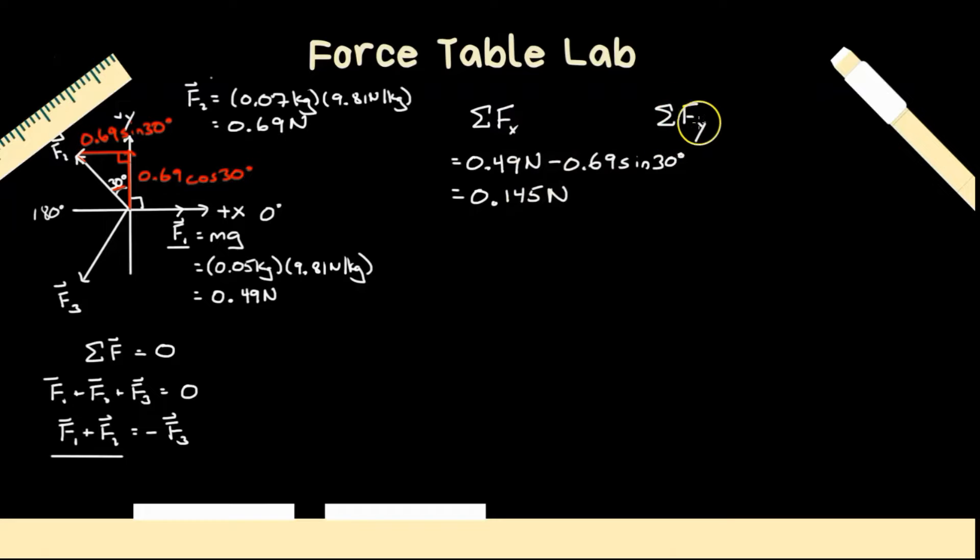What about in y? So let's do y. We'll do y over here. Now, our first force vector doesn't have a y component. It's perfectly along x. So our only y component is right here. That's our only y component. So it's going to be equal to 0.69 times the cos of 30, which is equal to 0.598 newtons. So just keeping an extra digit there for now.